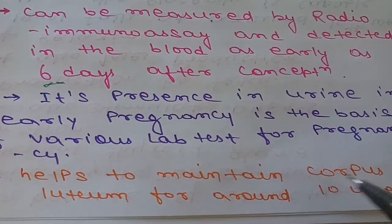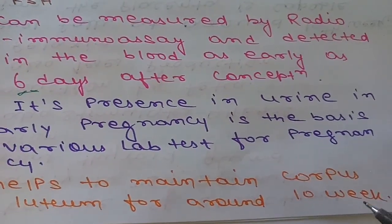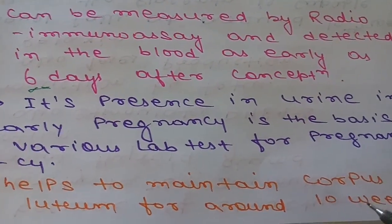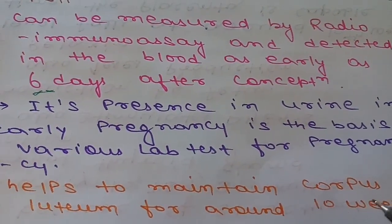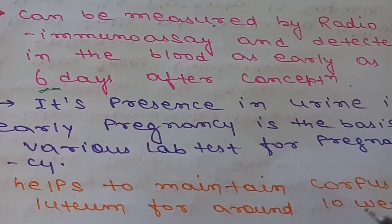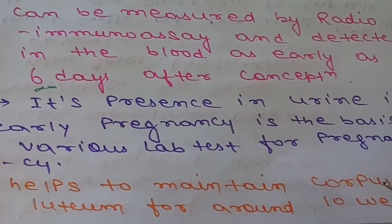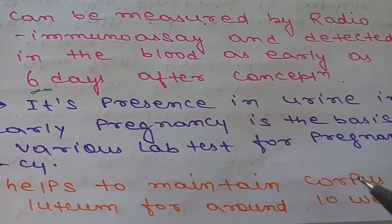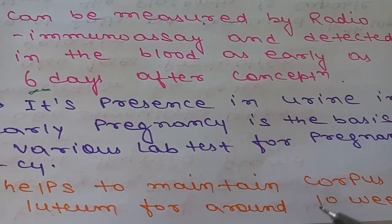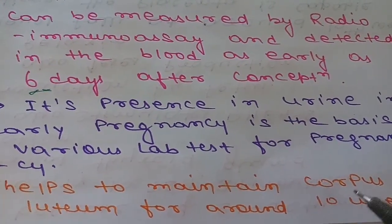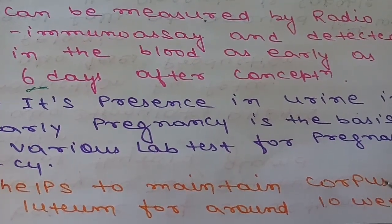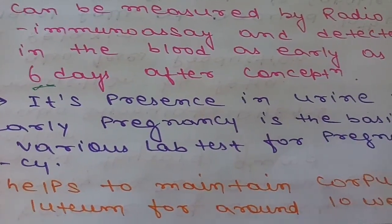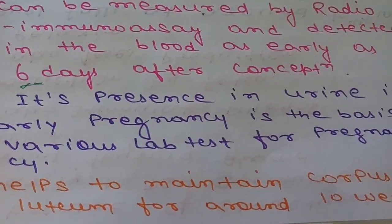Coming to its functions: HCG helps to maintain the corpus luteum for around 10 weeks. After 10 weeks, the role of secreting estrogen and progesterone is taken over by the placenta. Until the placenta is formed, the corpus luteum is secreting estrogen and progesterone, and it is maintained by HCG.